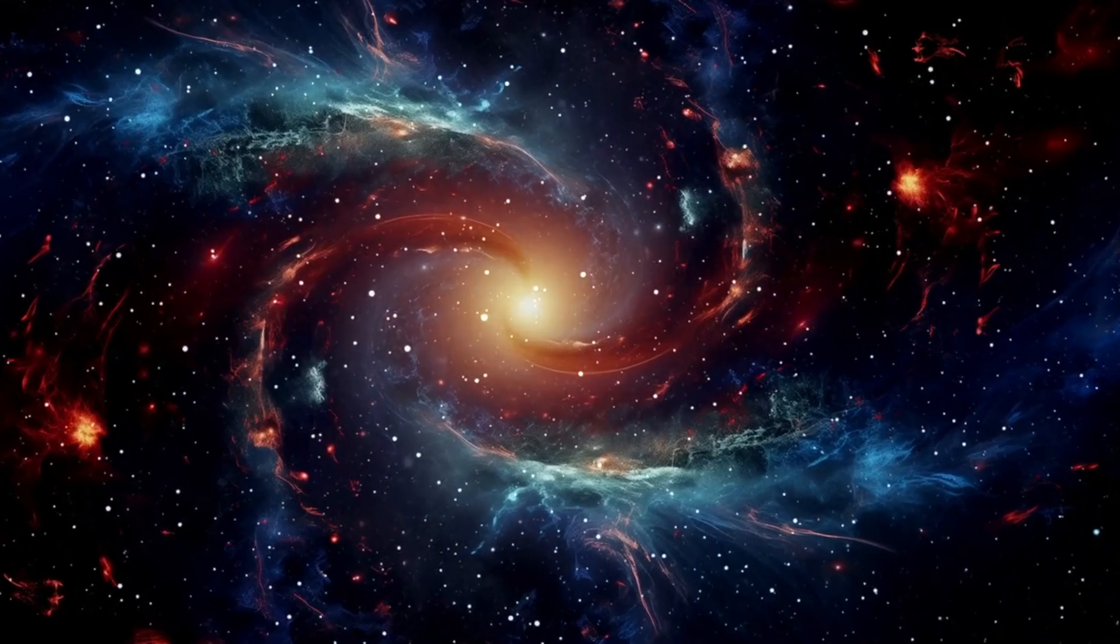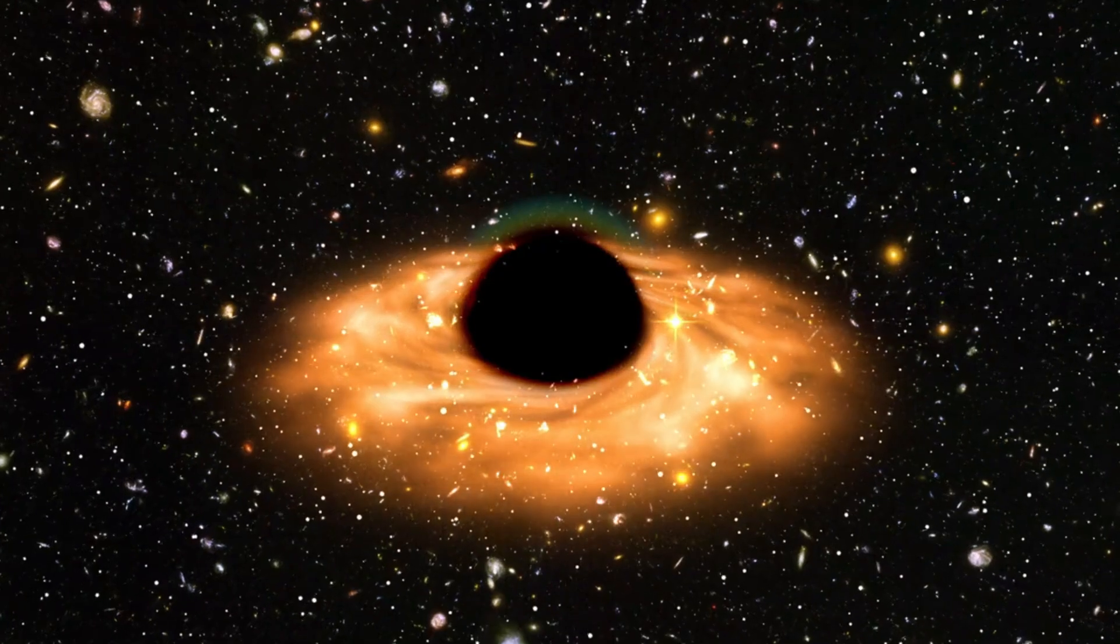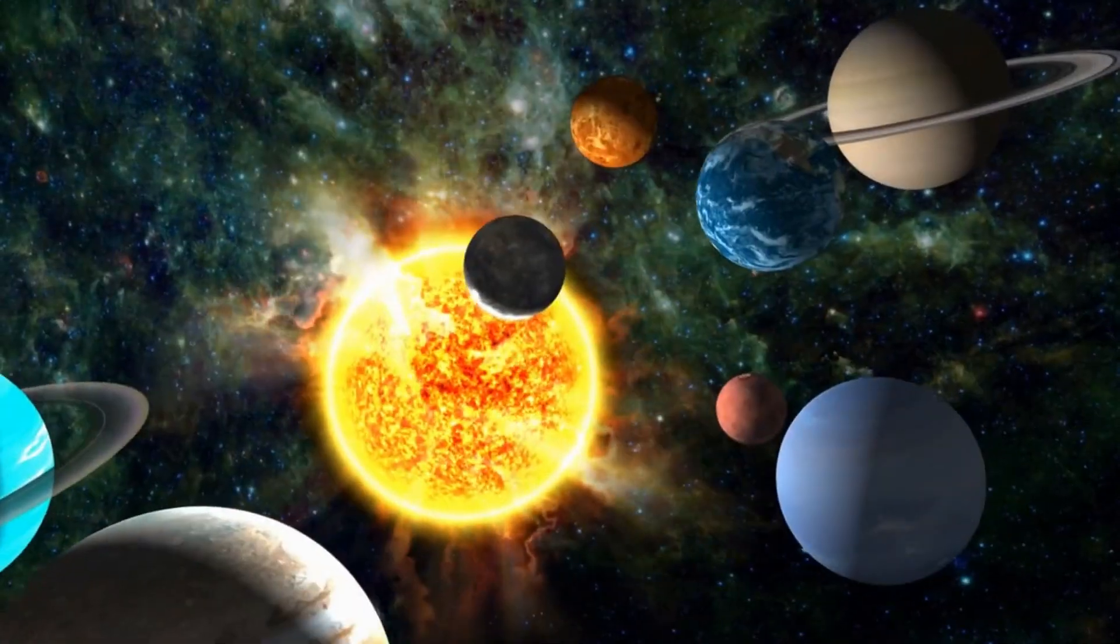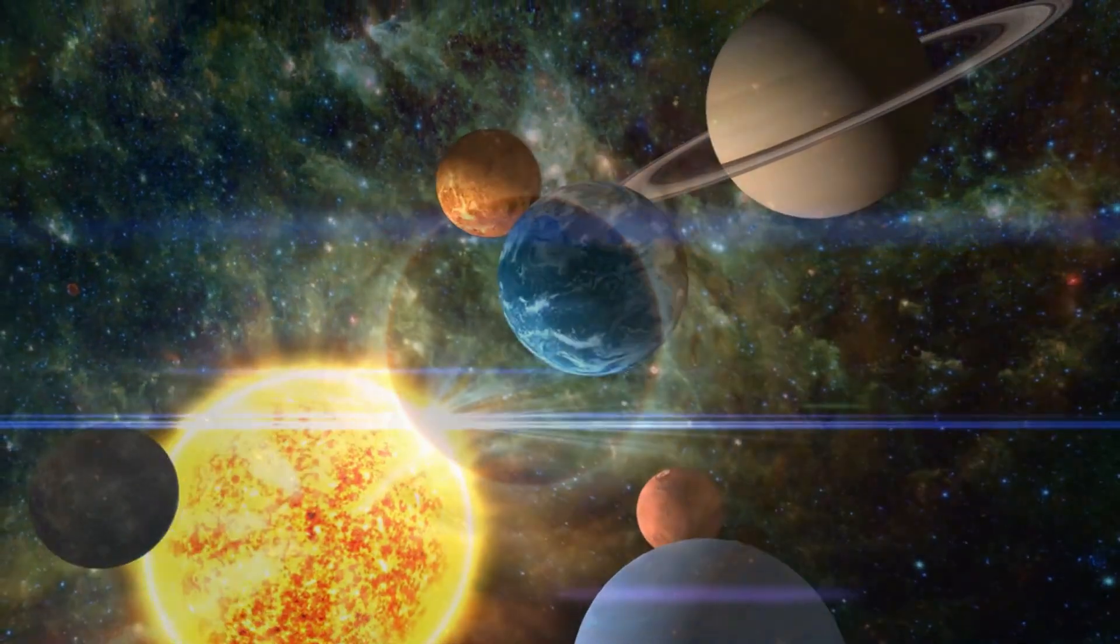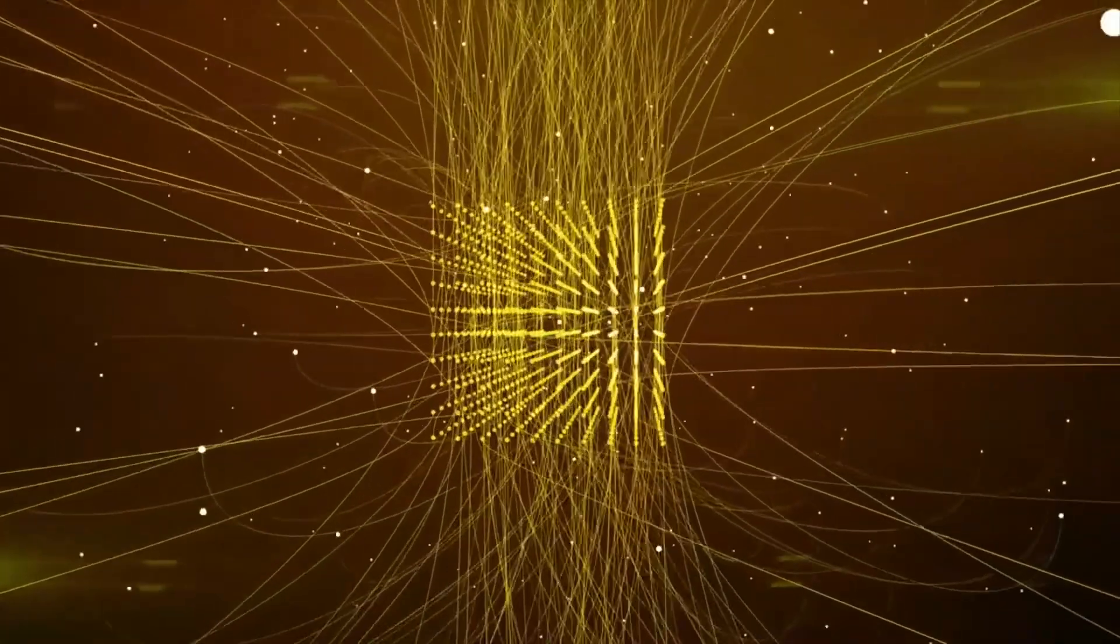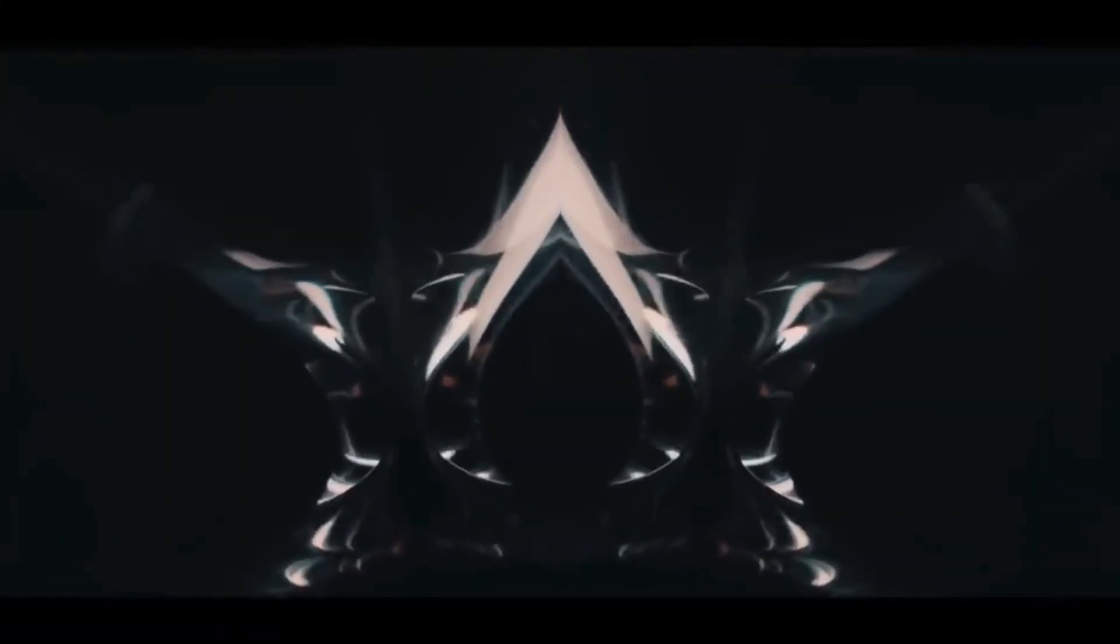Right now, our understanding of the universe is split between two competing systems: Einstein's general relativity and quantum mechanics. General relativity works perfectly for massive objects like planets, stars, and black holes. It explains how spacetime bends under the influence of mass and energy, shaping the way celestial bodies move and interact.